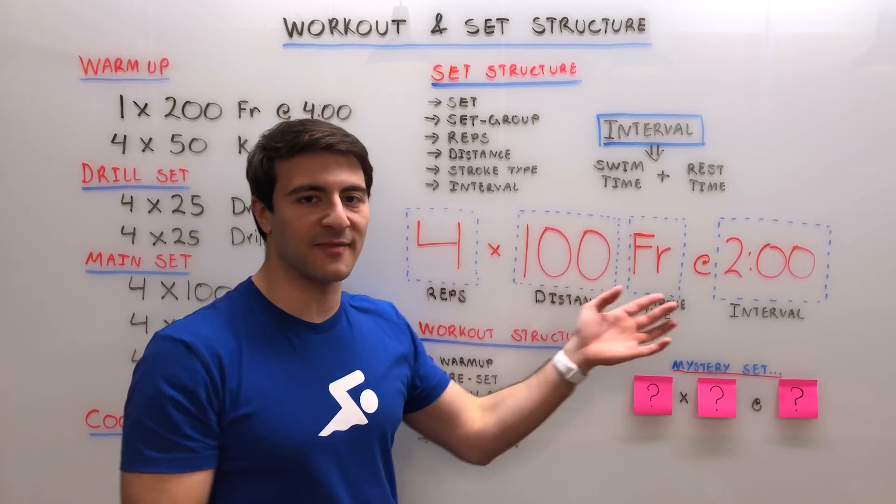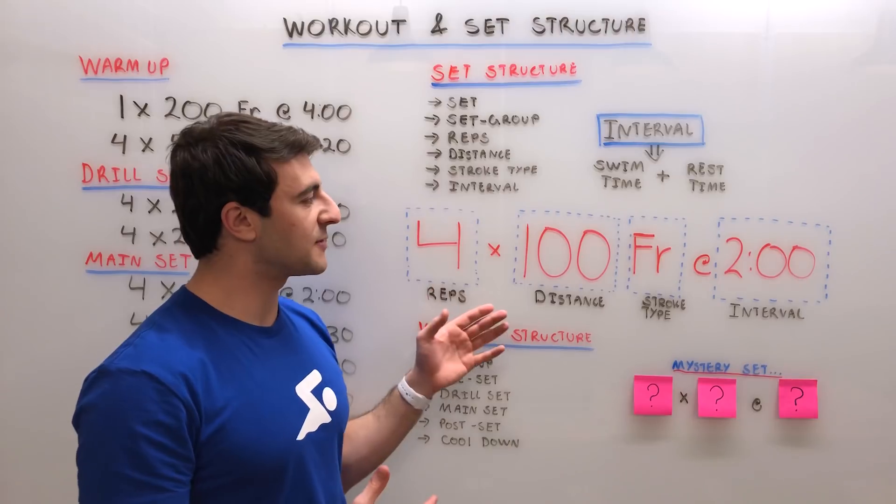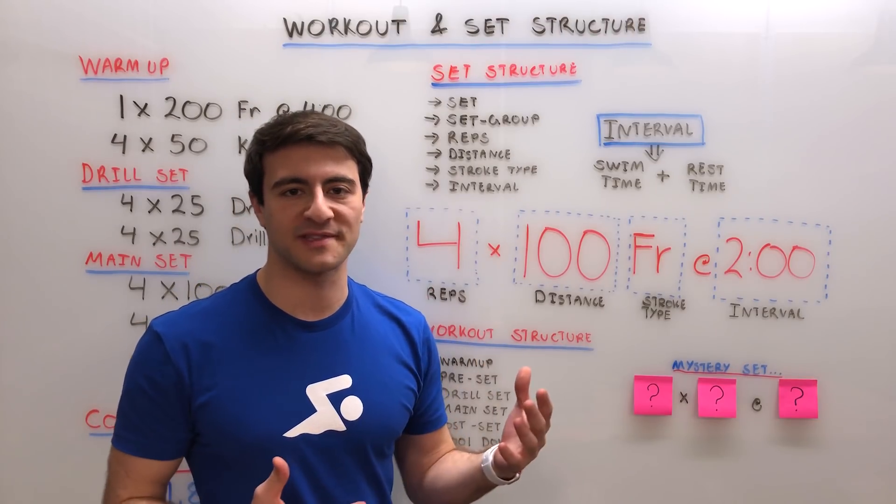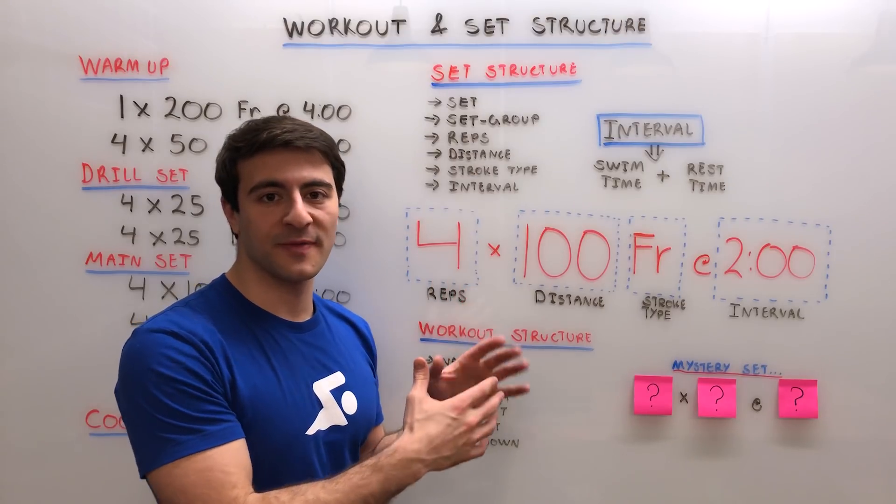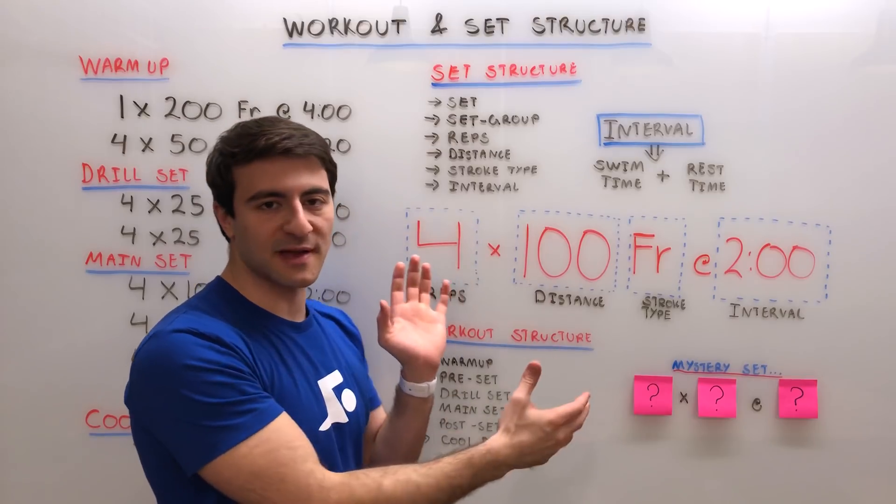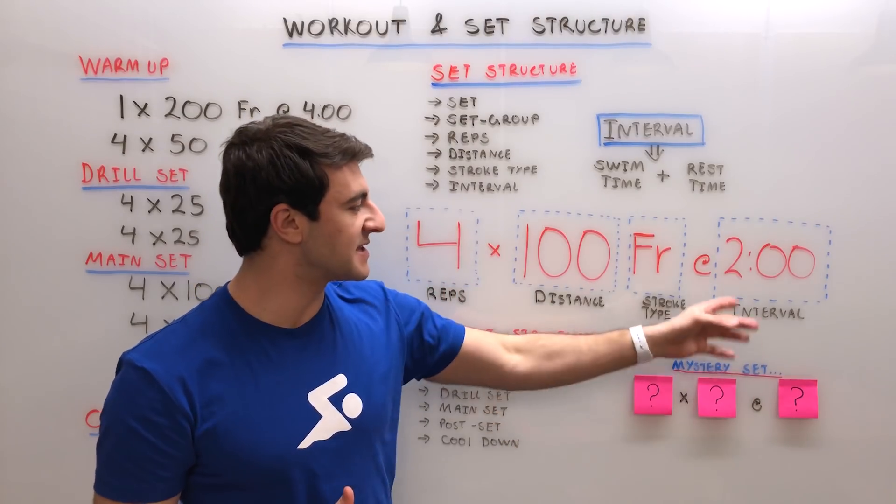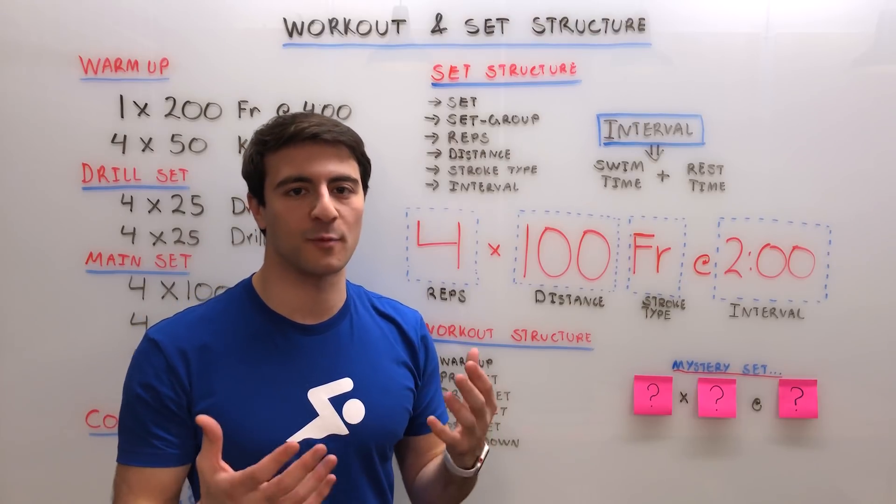So four 100s freestyle on the two minute will take eight minutes total, even if it only takes you one minute and 30 seconds to actually swim 100. In that scenario, your swim time will be six minutes over the course of the entire set, but the total set will take eight minutes because the interval is what dictates how long the actual set will be.